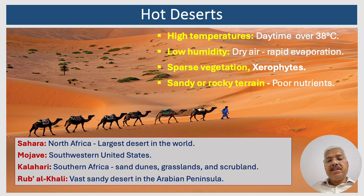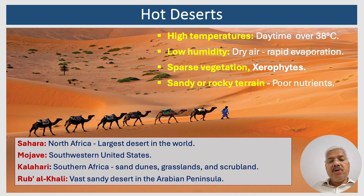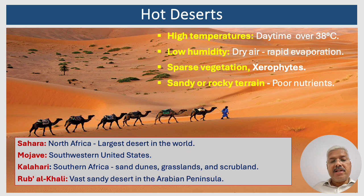The soil in hot deserts is typically sandy or rocky with poor nutrient content. Some examples of hot deserts are: the Sahara Desert, the largest desert in the world, covering parts of North Africa; the Mojave Desert, located in the southwestern United States, known for its Joshua trees and desert tortoises; the Kalahari Desert in southern Africa, with a mix of sand dunes, grassland, and scrubland; and the Rub' al Khali, or Empty Quarter, a vast sandy desert in the Arabian Peninsula.